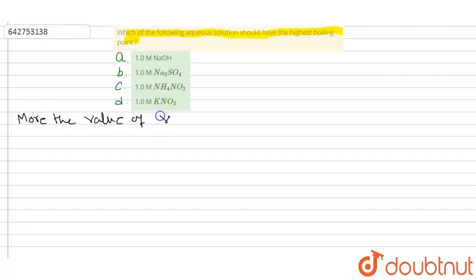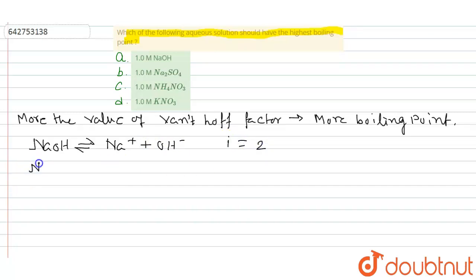For NaCl, it dissociates into one mole of Na+ and one mole of Cl- minus. So for NaCl, van't Hoff factor i equal to 2.